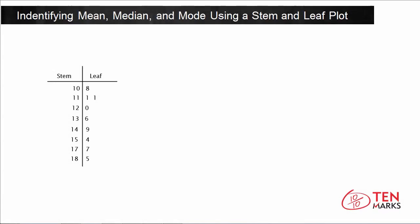Let's begin by discussing stem and leaf plots in general. A stem and leaf plot, as shown here below, is a type of graph that plots data points in horizontal rows based on place value. The stem is the left-hand section of the graph. The stem collects and groups the first digits of all the data points.